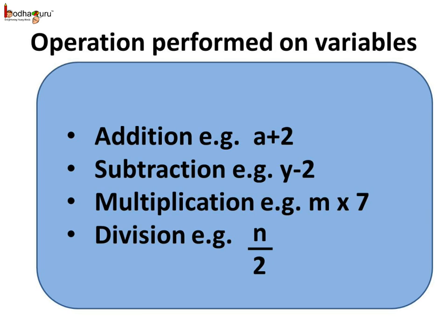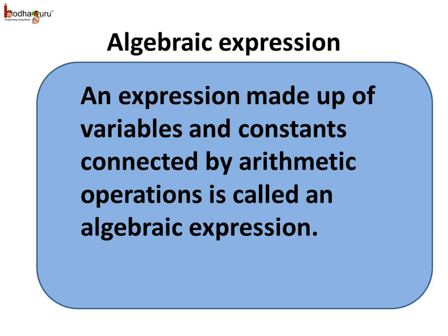So, to summarize what we learned today, all the 4 arithmetic operations can be performed on the variables. For example, addition, a plus 2 is an algebraic expression, or subtraction y minus 2, multiplication as in m multiplied by 7 which is same as 7m, and division, for example, n divided by 2.